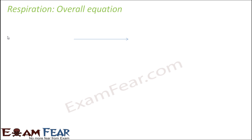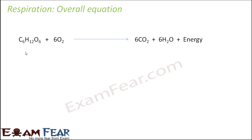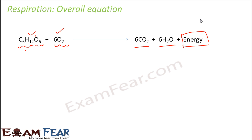Now let us look at the overall equation of respiration. It is just the opposite of photosynthesis, so the equation is the reverse. Whatever was on the product side in photosynthesis is on the reactant side in respiration. Glucose and oxygen are the reactants here, and they combine — glucose gets oxidized to form carbon dioxide, water, and energy. This energy is very important as it gets stored in ATP. When we talk about the process of respiration, we calculate how many molecules of ATP are produced, as that measures the energy being produced.